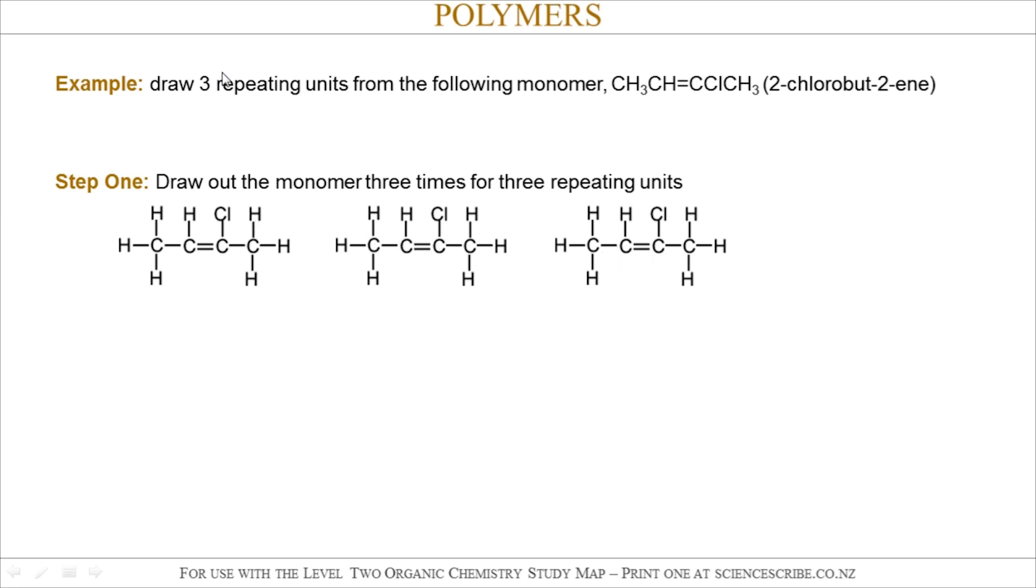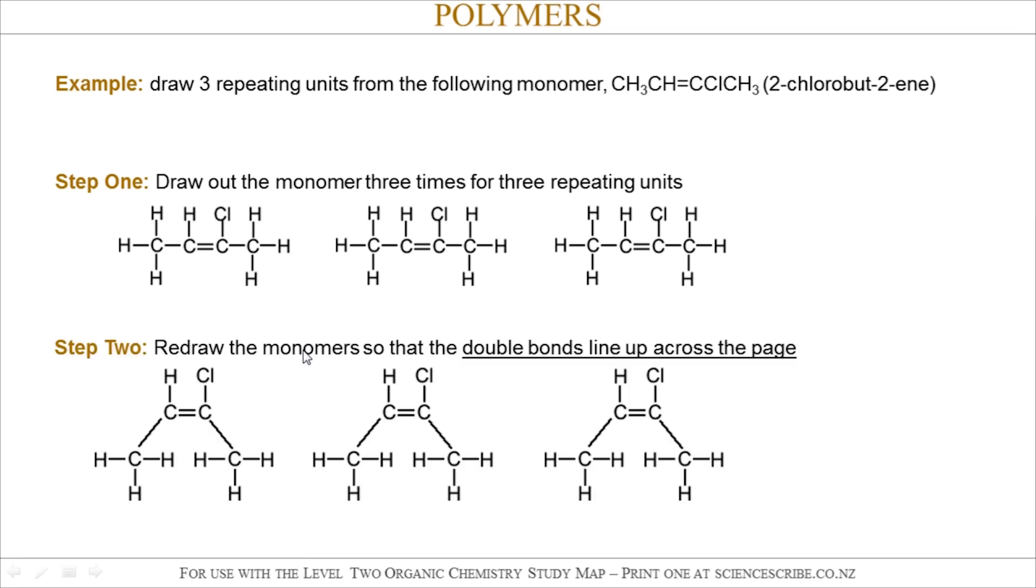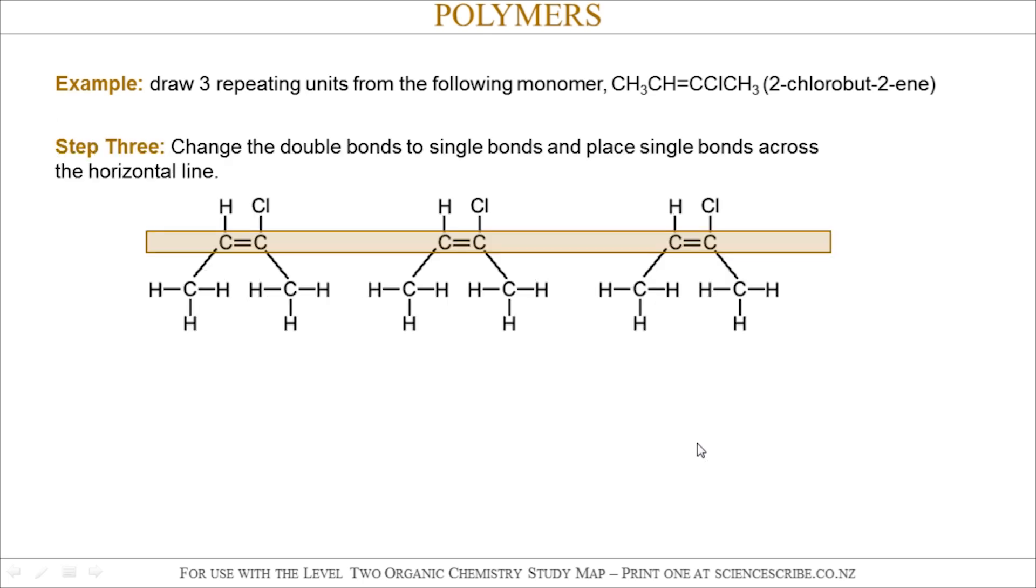After that, I'm going to redraw each of these units so that the double bonds all line up. That's shown there with a brown box. After that, I'm going to change all of these double bonds into single bonds, and then I'm going to connect each monomer unit up with a single bond, like shown there.